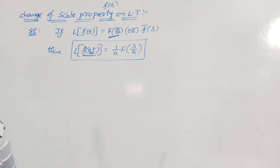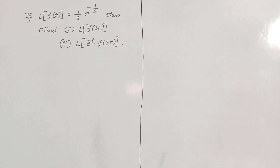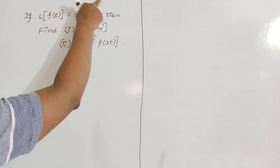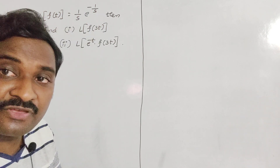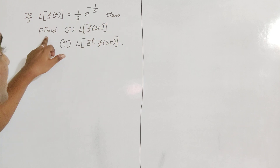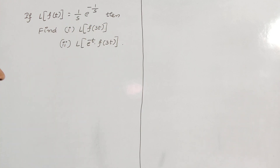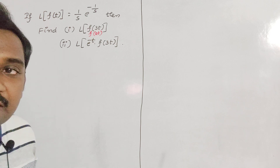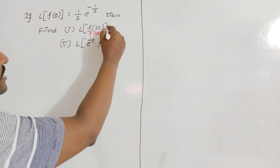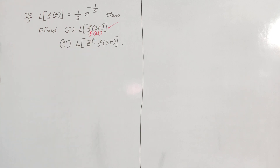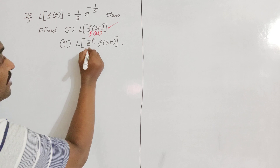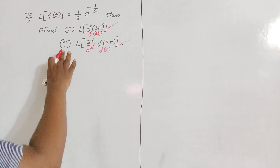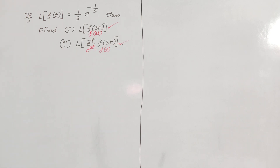I will explain this with a suitable example. Given that L of f of t equals 1 by s times e to the power minus 1 by s, we have to find: first, L of f of 3t — which is in the form f of at, so we apply the Change of Scale Property; and second, L of e to the power minus t times f of 3t — which is in the form e to the power at times a function of t, so we apply the First Shifting Theorem.